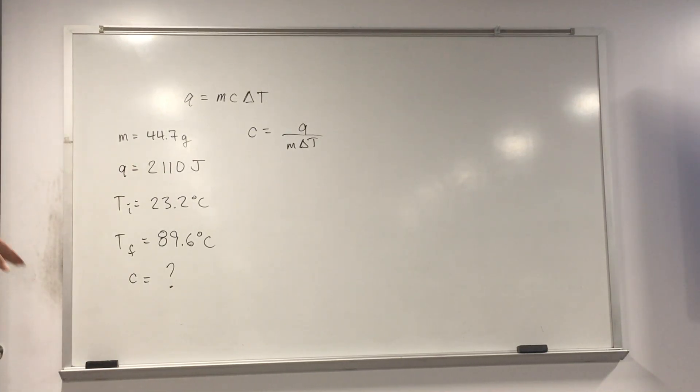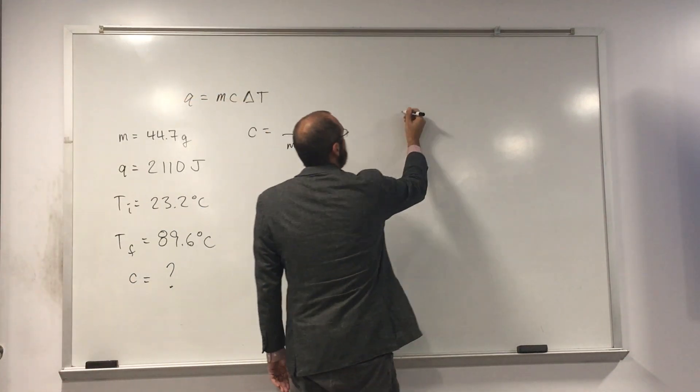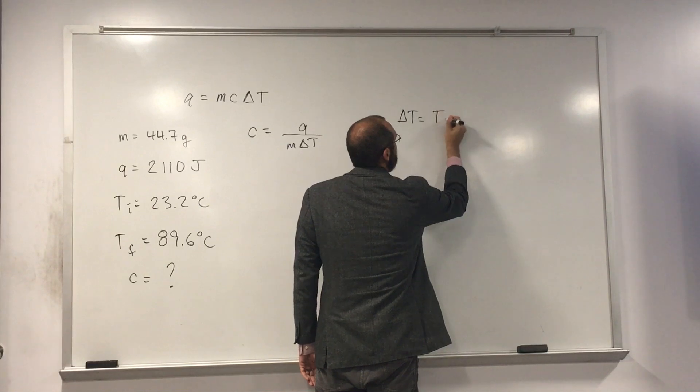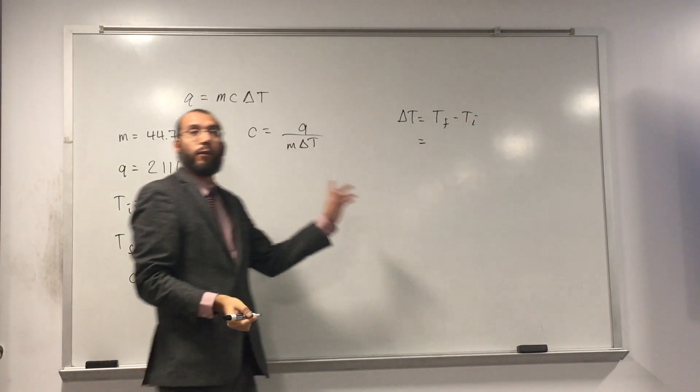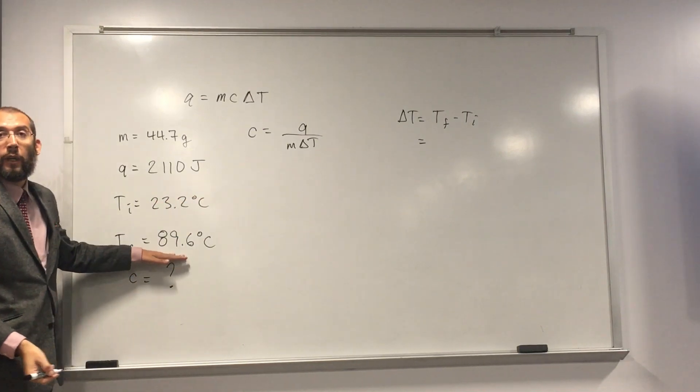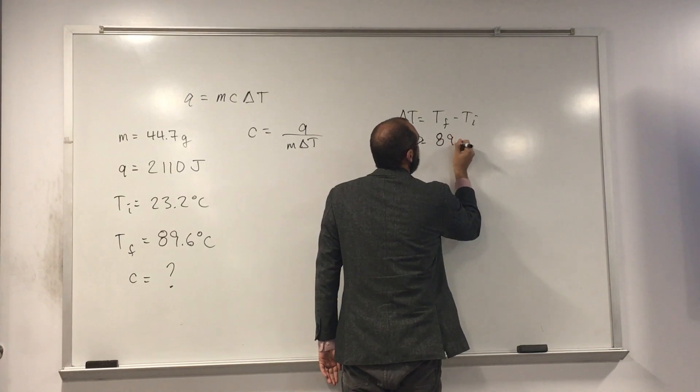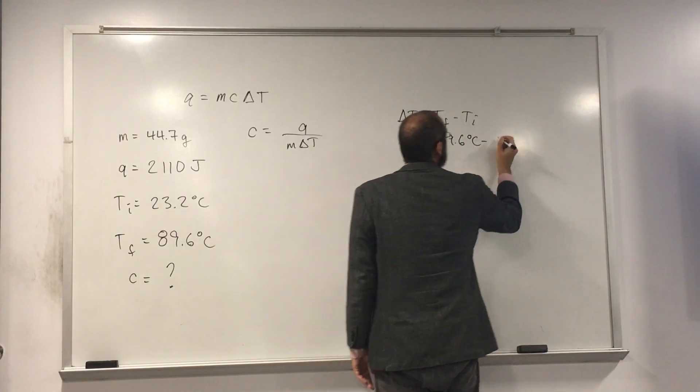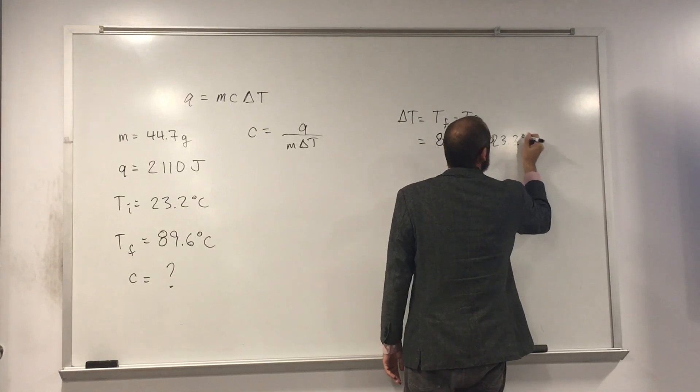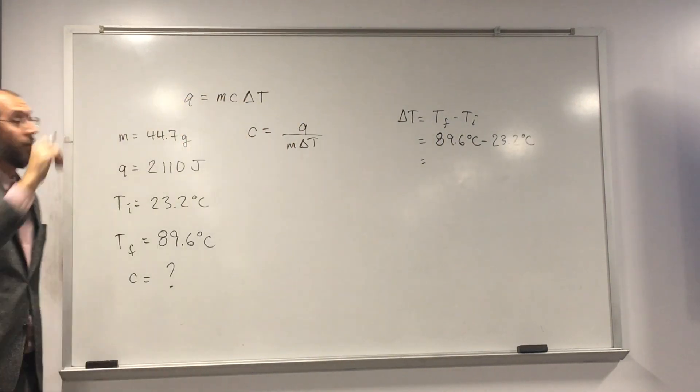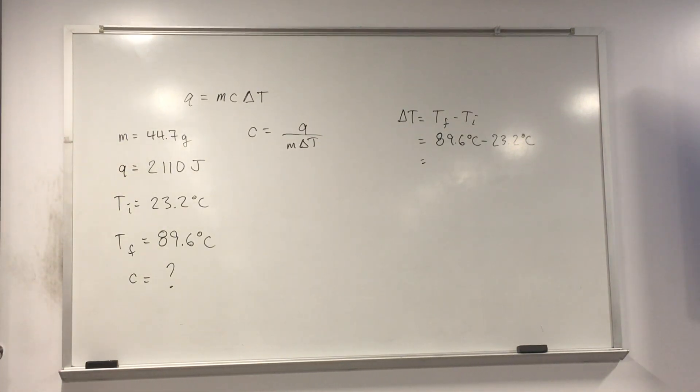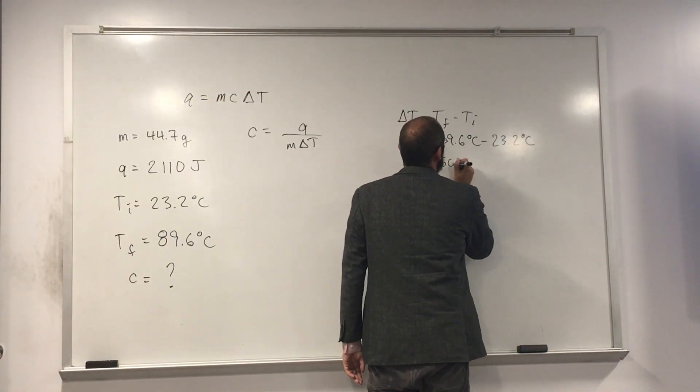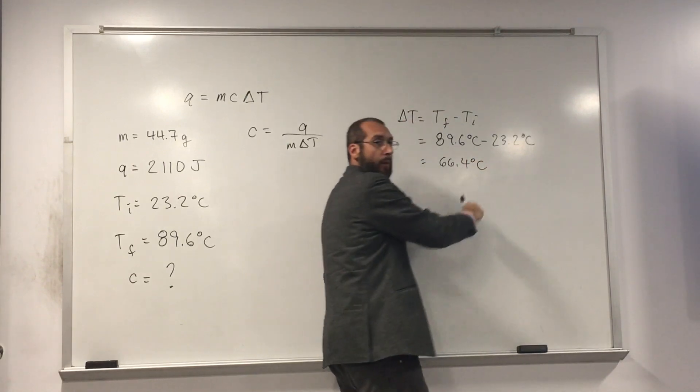So do we have all of those numbers? Well, we don't have delta T yet, but we have the numbers that comprise delta T, right? So remember, let's just go over here and remind ourselves, delta T equals TF minus TI. And of course, now we have those numbers, TF being 89.6 degrees Celsius minus 23.2 degrees C. So did anybody get an answer for that? What is that? 66.4, right? 66.4 degrees Celsius.